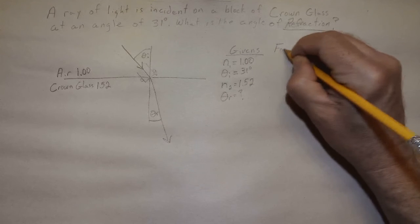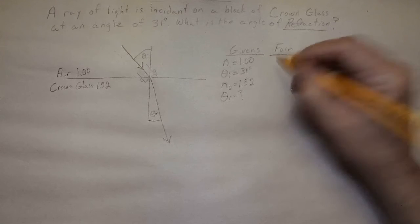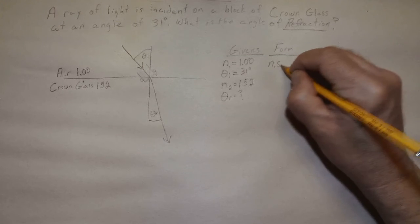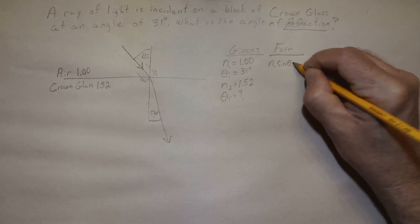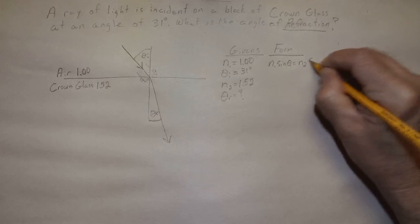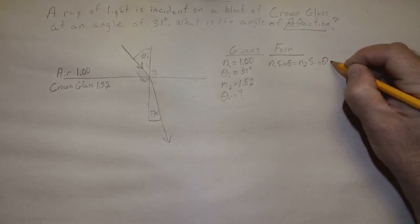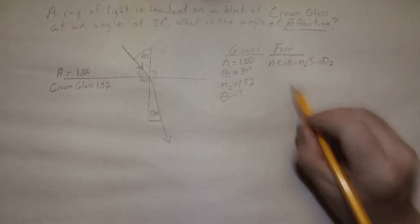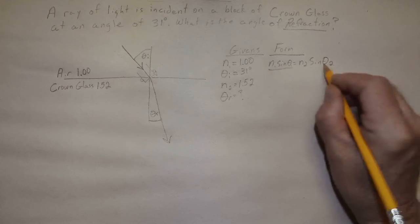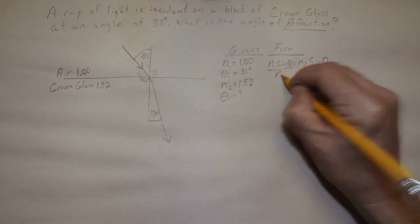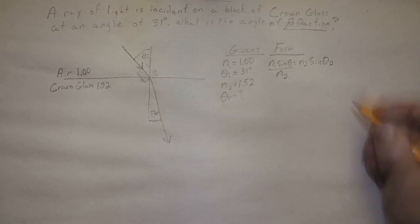So the formula of course, Snell's Law formula: N1 sine theta 1 equals N2 sine of theta 2. Rearrange that, so to get the sine of theta 2 we take all this and just divide it by N2.